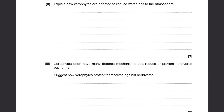Explain how xerophytes are adapted to reduce water loss to the atmosphere. Previously, we talked about how they can efficiently absorb water, and now we're going to talk about how to reduce water loss. How does a plant lose its water? It's through their leaves, and specifically two parts from the leaves. The first one is the stomata. So the plants will have few stomata compared to normal plants, and the stomata will stay closed during the day when the temperature is too high, and it will open at night when the temperature is much lower.